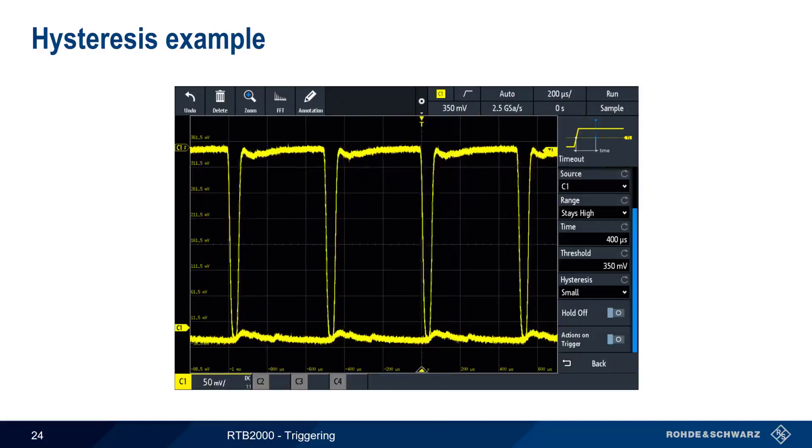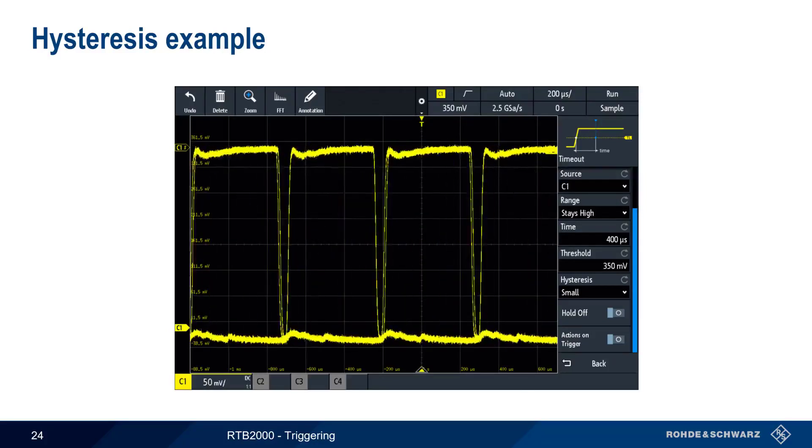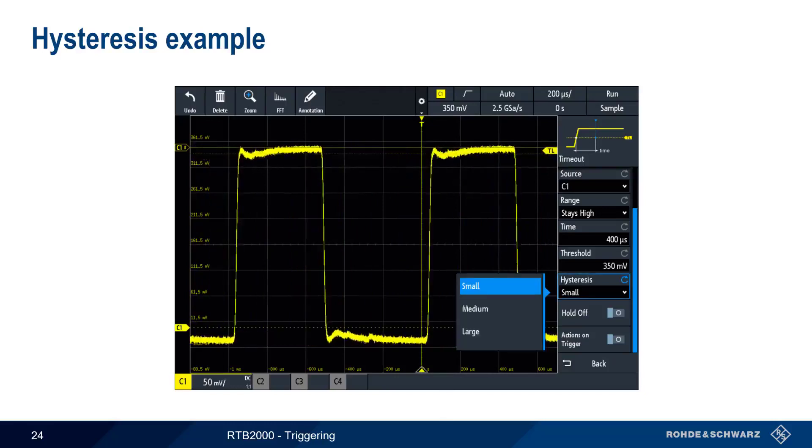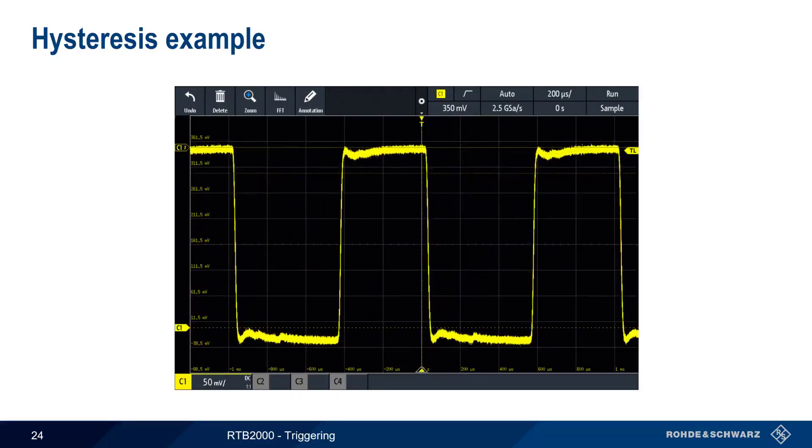Let's look at an example. Because of noise, the timeout trigger is unstable when only a small hysteresis value is used. Changing from a smaller to a larger hysteresis value prevents the RTB from triggering due to this fluctuating noise, and the result is a stable waveform on the RTB screen.